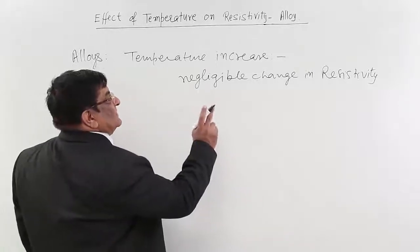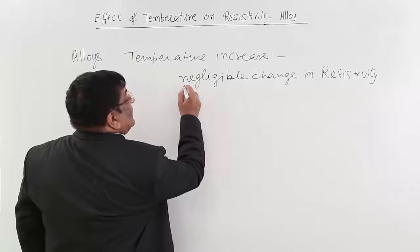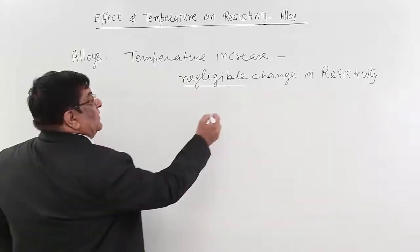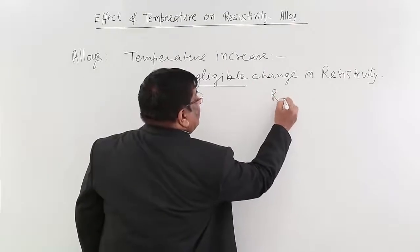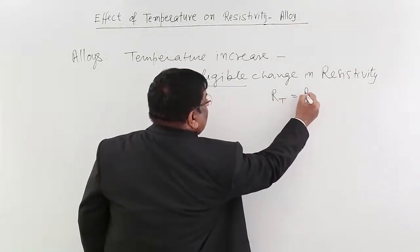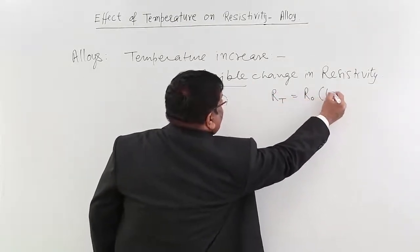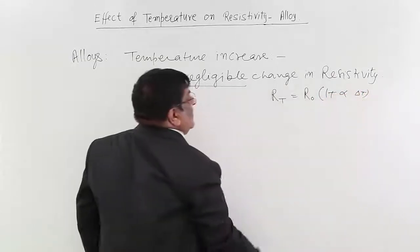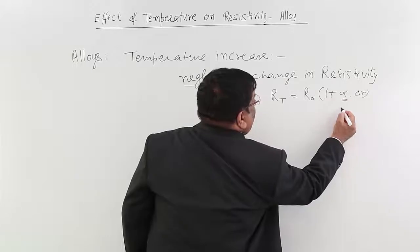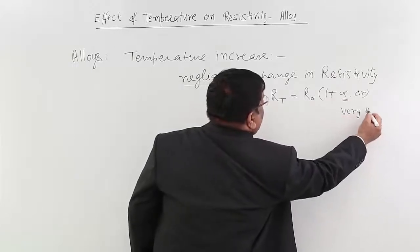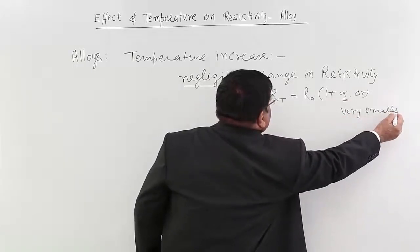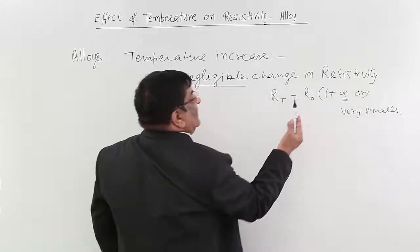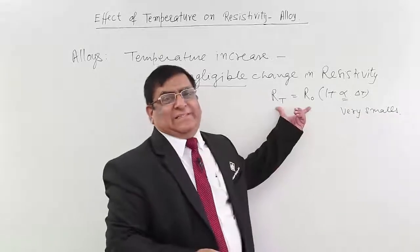The temperature coefficient of resistivity (alpha) for alloys is negligible — very small. We know that resistance after heating equals original resistance multiplied by (1 + alpha × change in temperature). If alpha is very small or negligible, then when we increase the temperature, there is not much change in the resistance.